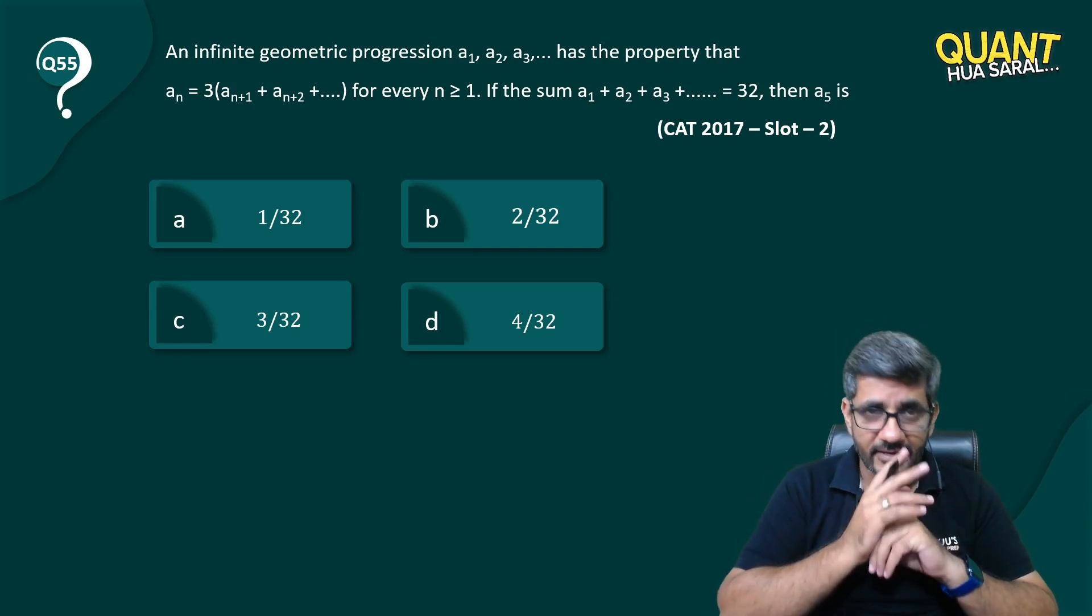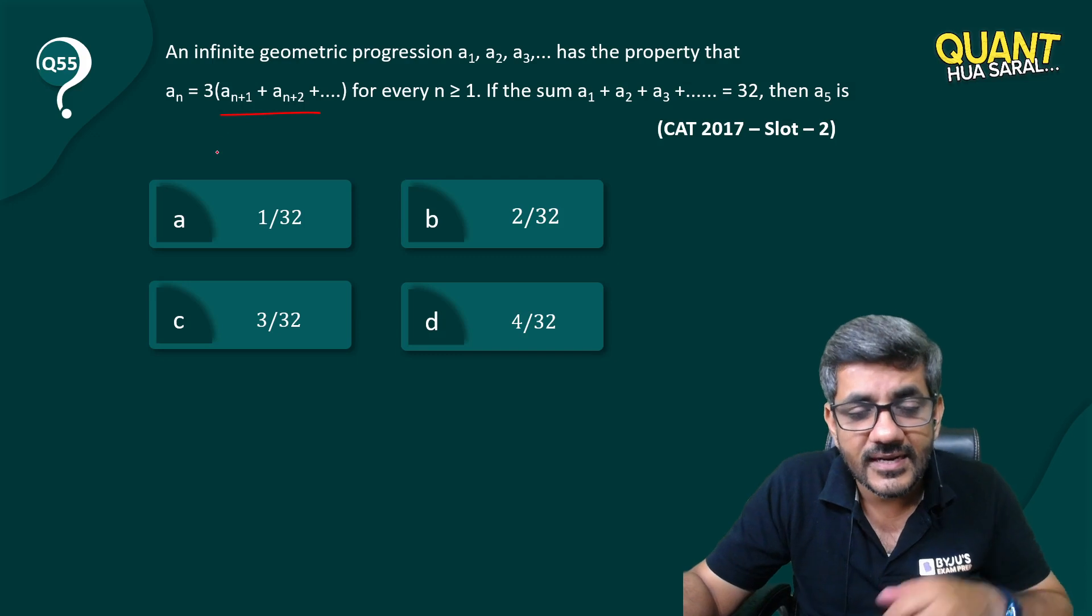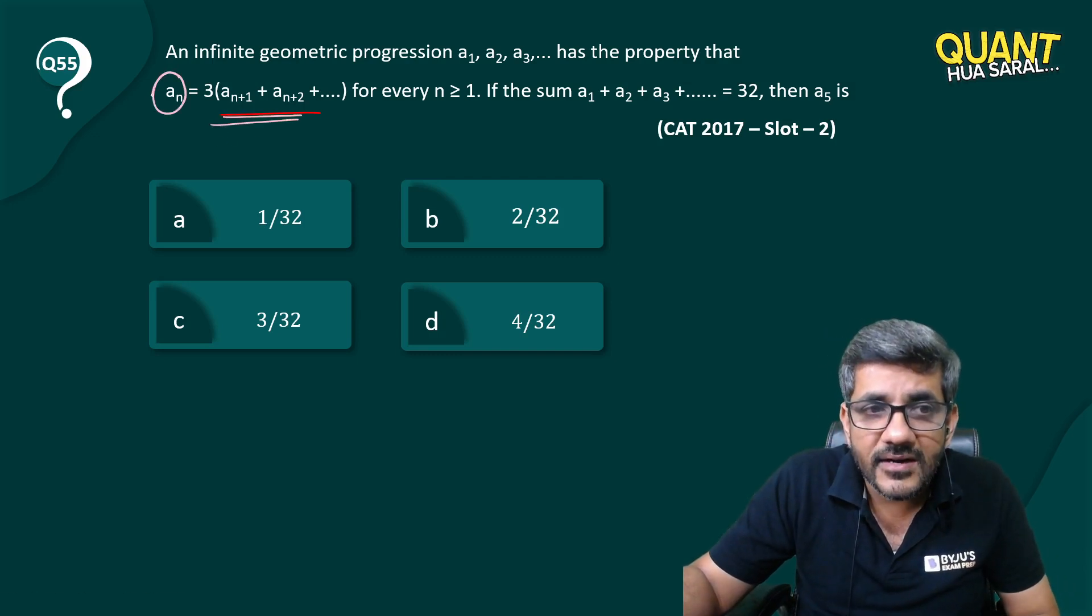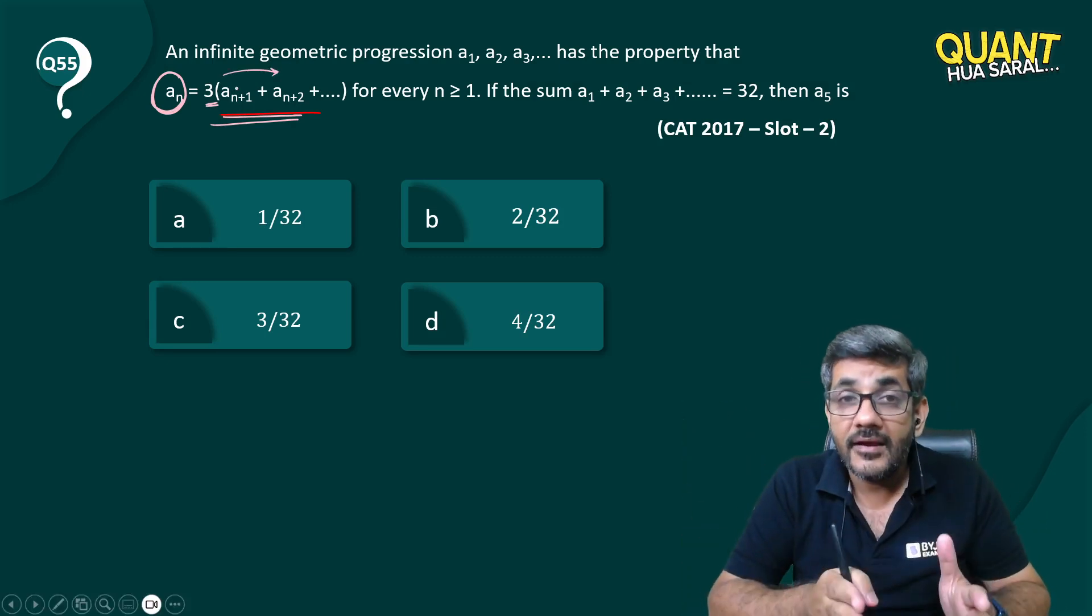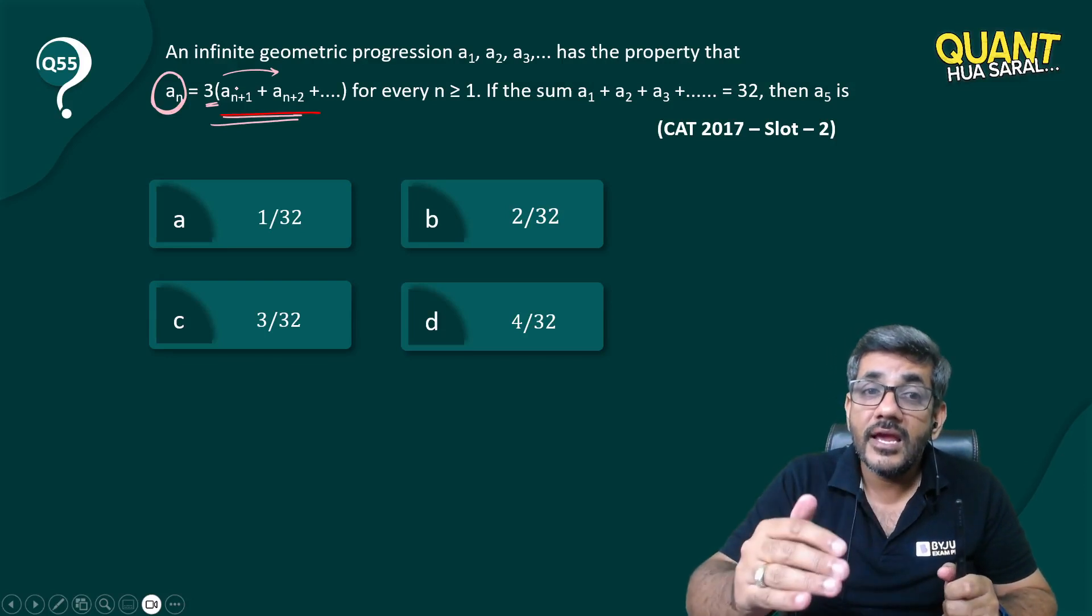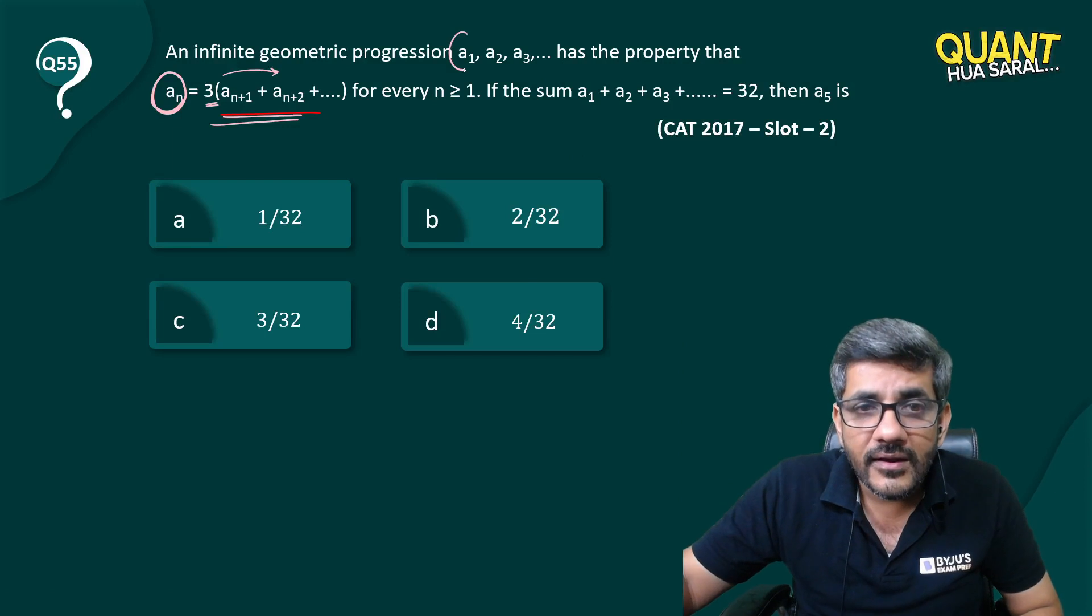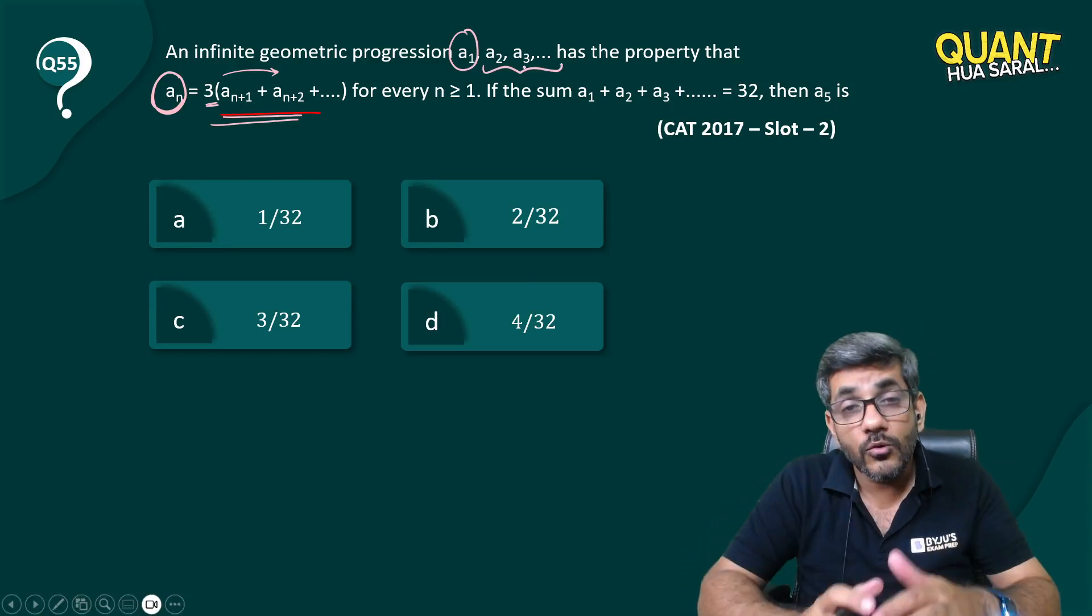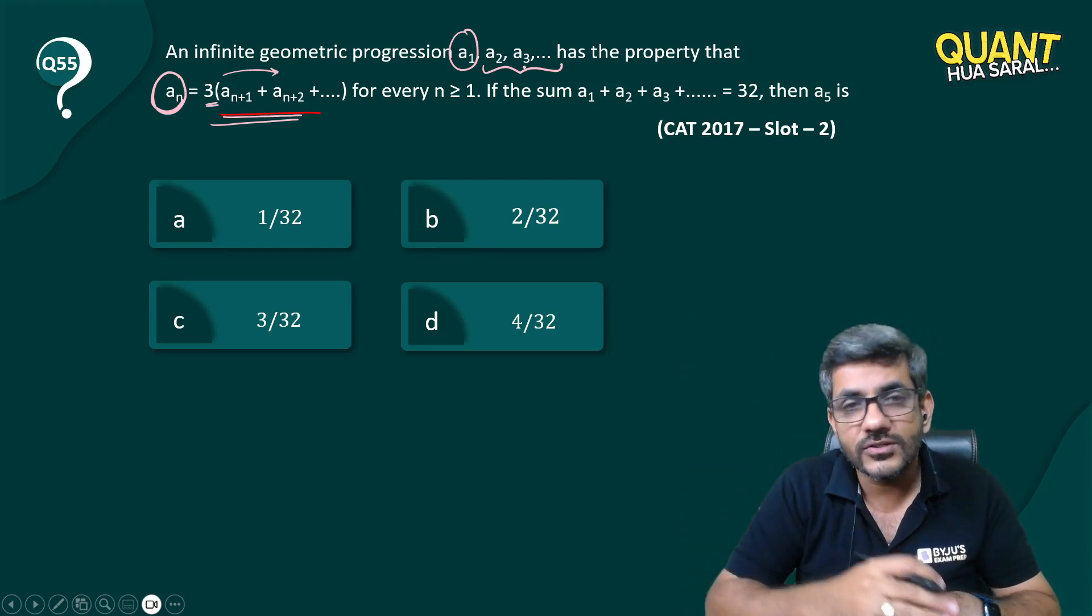First of all, let's try to understand this. What is he trying to say here? He is saying that every term is three times the sum of all upcoming terms, right? a_n is three times a_(n+1) + a_(n+2) and so on. It's like a_1 is three times the sum of all upcoming terms, a_2 is three times the sum of all upcoming terms, and so on and so forth.